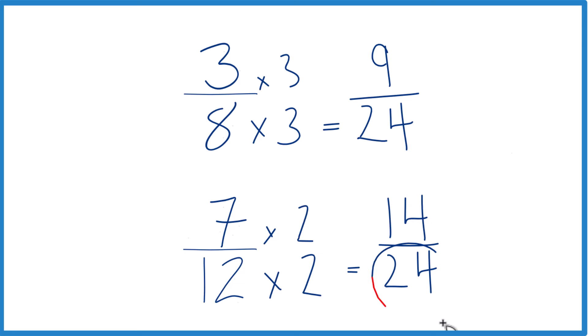Since you have the same denominators, you just compare the numerators. You can see that 14 is larger than 9, so 14/24 is larger than 9/24, and 7/12 is larger than 3/8.